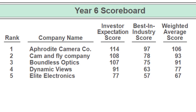Here we have the results for the year six scoreboard. Company A is in first place with 106 — a pretty nice lead, and 106 is a great score for the very first year. Company C is at 93, company B is at 91, so they're not too far away from company A. Company D is at 77 — that's a decent gap there.